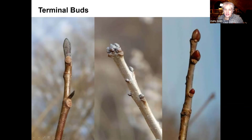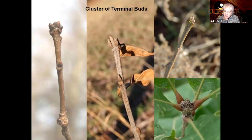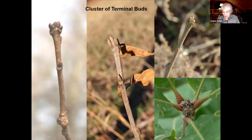All oaks have a cluster of terminal buds — how many are at the tip doesn't really matter, just multiples. Those in the white oak group typically have more rounded buds at the tip, just like the lobes on their leaves. For the red oak group, the buds are much longer and more pointy. This center one is red oak — versus white oak on the left, swamp white oak in the upper right, and bur oak in the lower right.